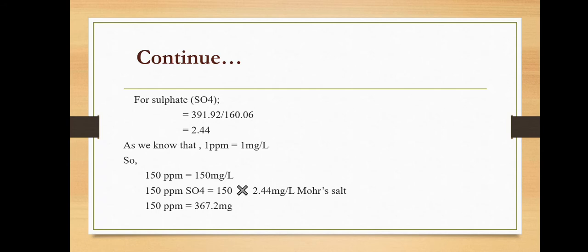As we know that 1 ppm equals 1 mg per liter. When we dissolve 1 mg in 1 liter, it equals 1 ppm. So when we dissolve 150 mg in 1 liter, it will equal 150 ppm. Therefore, 150 ppm of sulfur solution will equal 367.92 mg.